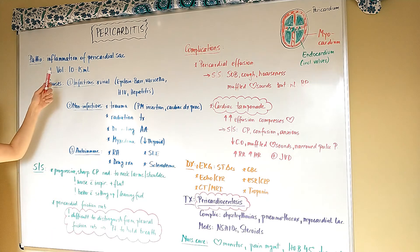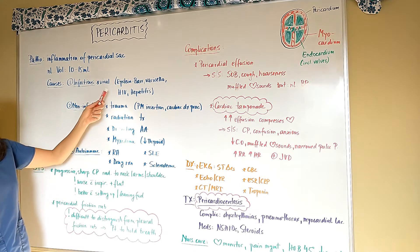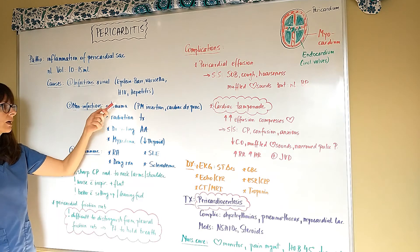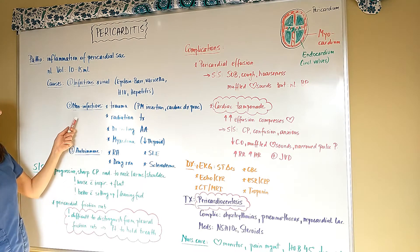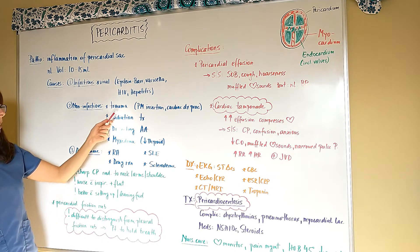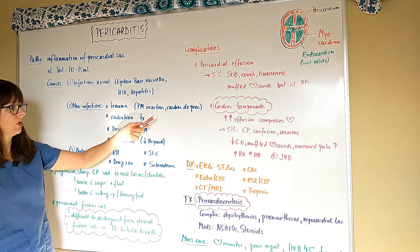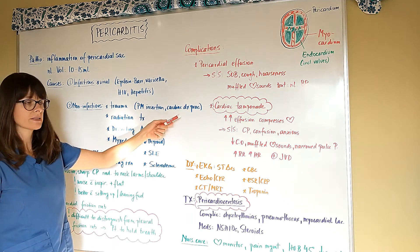Now causes for pericarditis can be viral, such as Epstein-Barr, varicella, HIV, and hepatitis, or it can be non-infectious causes such as trauma from pacemaker insertion or any kind of cardiac diagnostic procedure.